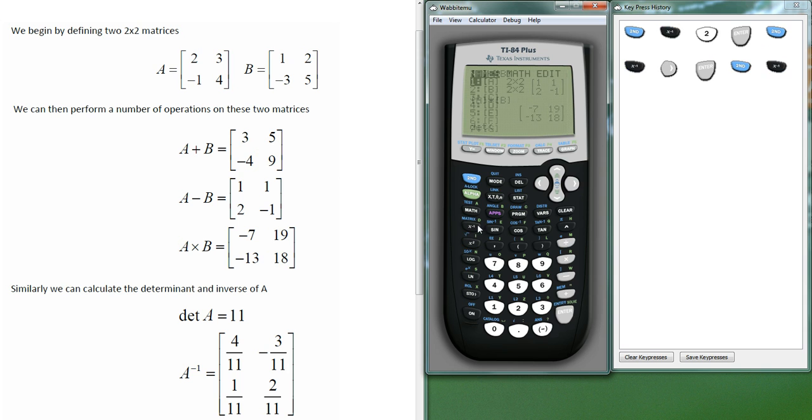And we need to select matrix A. Close the bracket. Enter. And that will give us the determinant. So because the determinant's not zero, we guarantee that the 2x2 matrix A will have an inverse. So now we can go ahead and calculate that.